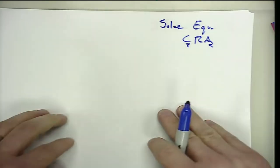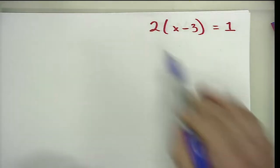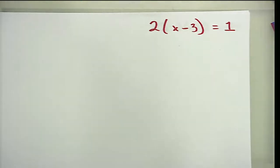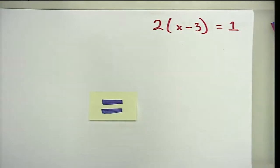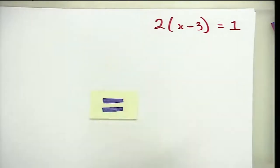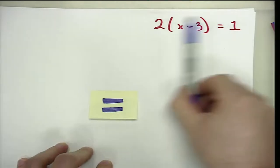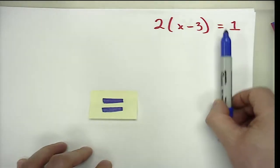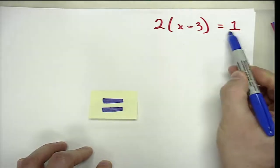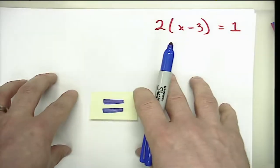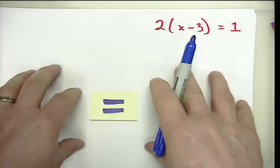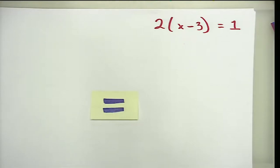Our first problem is two times the quantity X minus three is equal to one. One thing you must include in the abstract model is an equal sign. We like to use a sticky note to model the fact that you have one expression on the left-hand side and one on the right-hand side. Students often see one big thing, so it's important to key them into that equal sign. To cross it, we have to utilize inverse operations.